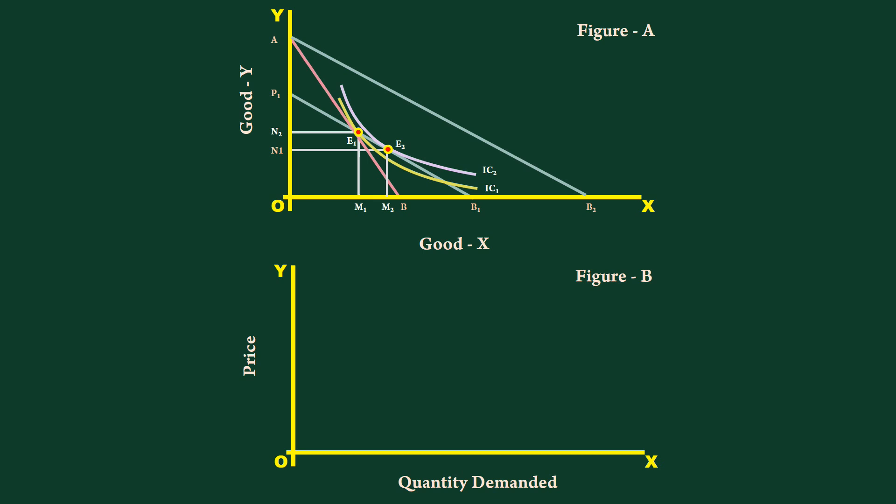From figure A, we know at P2 price, the consumer consumes M1 units. Let us plot that point on figure B and name the point as F. Join these two points.